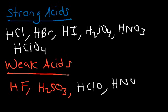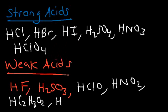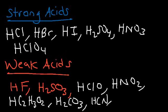So HClO4 is a strong acid but HClO is a weak acid. HNO3 is a strong acid, HNO2 is a weak acid. Some other weak acids are acetic acid, carbonic acid, hydrocyanic acid.